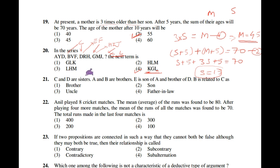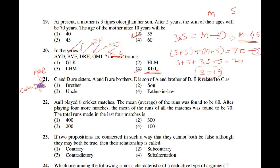Question number 21: C and D are sisters. A and B are brothers. E is the son of A. How is B related to C? Since E is the son of A, and C is a sister of D, C would be the daughter of A. Therefore B, who is A's brother, would be the uncle of C. The correct option is the third one — uncle.